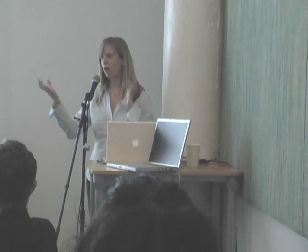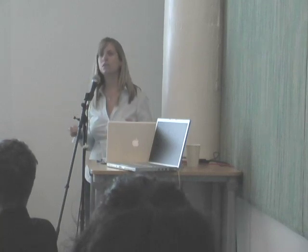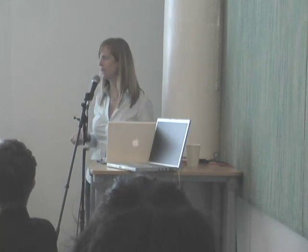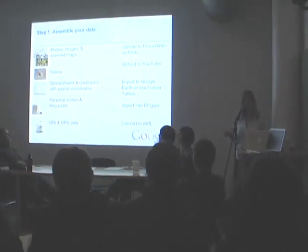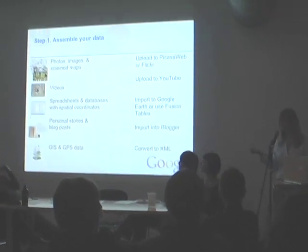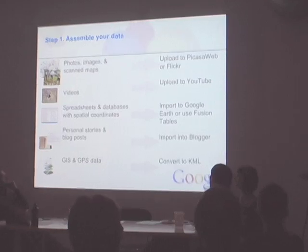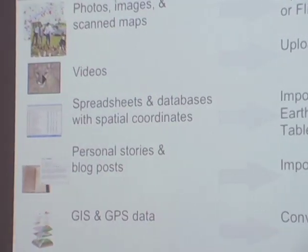Think about all the content that you have that you could put on a map. These are some examples of what you can take and visually display in a geospatial format. The most obvious ones are GIS or GPS data — just plug in a Garmin or Magellan unit and show GPS tracks spread over time. But you can also take YouTube videos and put them in a map. People are getting very creative with their maps.